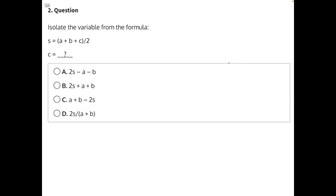Isolate the variable from the formula. In order to do this, we need to take everything that is not the variable we're isolating, which is c, and move it over to the other side of the equal sign, so we can get c completely by itself on the other side.